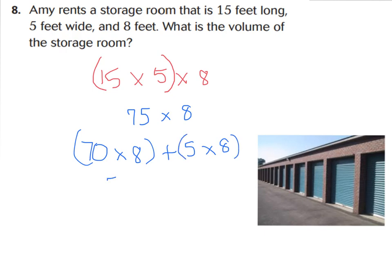So 70 times 8 plus 5 times 8. 70 times 8 would be 560, because 7 times 8 is 56, and we put our 0 down. Now let's work on the second partial product. 5 times 8 is 40.